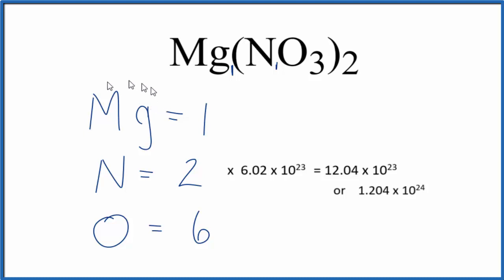For magnesium, we take one times Avogadro's number to get 6.02 times 10^23 atoms of magnesium in one mole of magnesium nitrate. This is Dr. B with the number of atoms in magnesium nitrate. Thanks for watching.